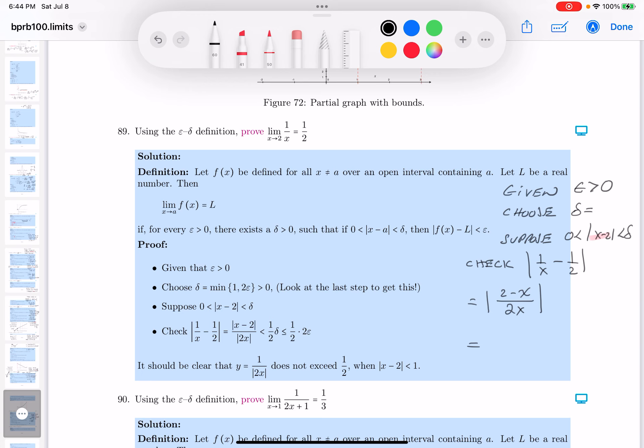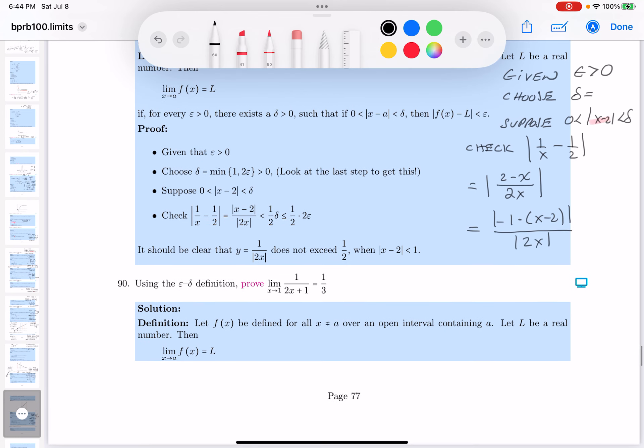This is going to be minus 1 times x minus 2 absolute value. We'll take care of that later. Over the absolute value of 2x. Let's keep moving forward. This is going to be the absolute value x minus 2 over the absolute value of 2x. I'm going to pull a 2 out and call it 2 absolute value of x.